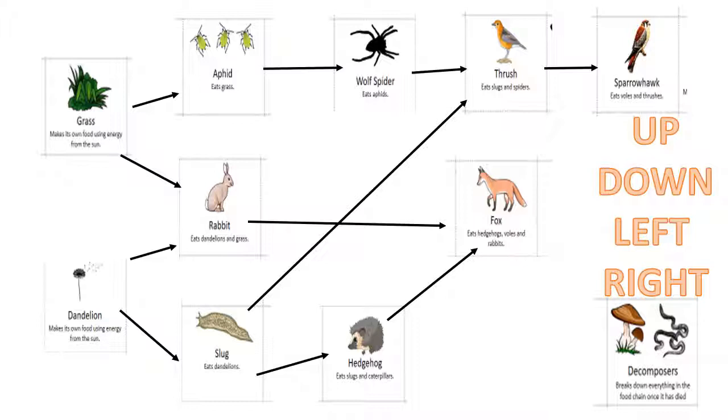Bit of a rant there at the end regarding that food web, but hopefully that all makes sense to you. This example should be easier than the pond would have been. Come and see us in H7 if you're not sure about any of it.